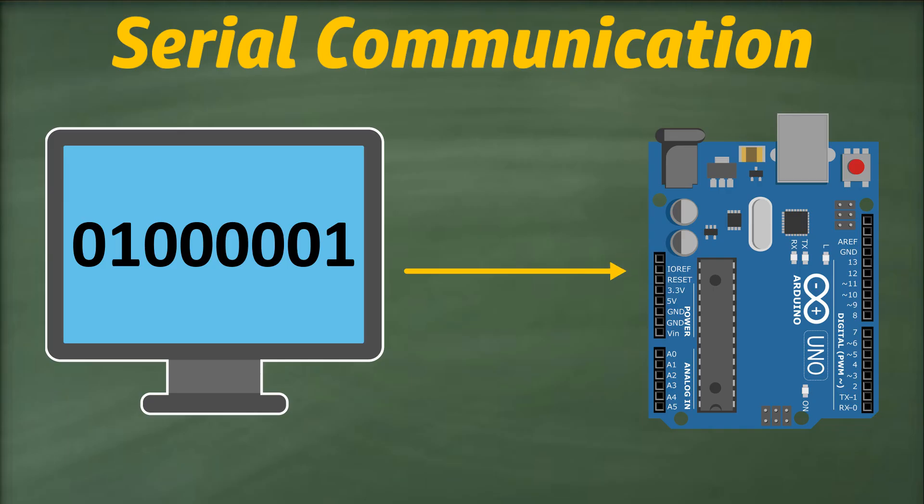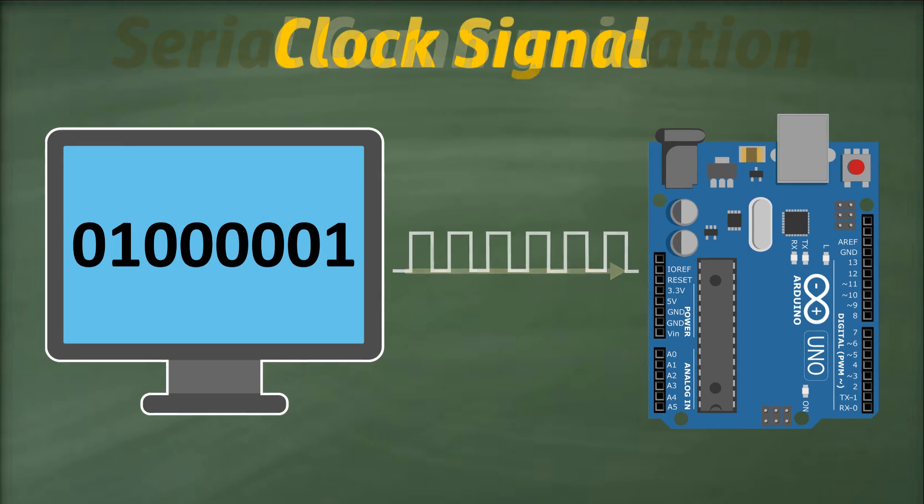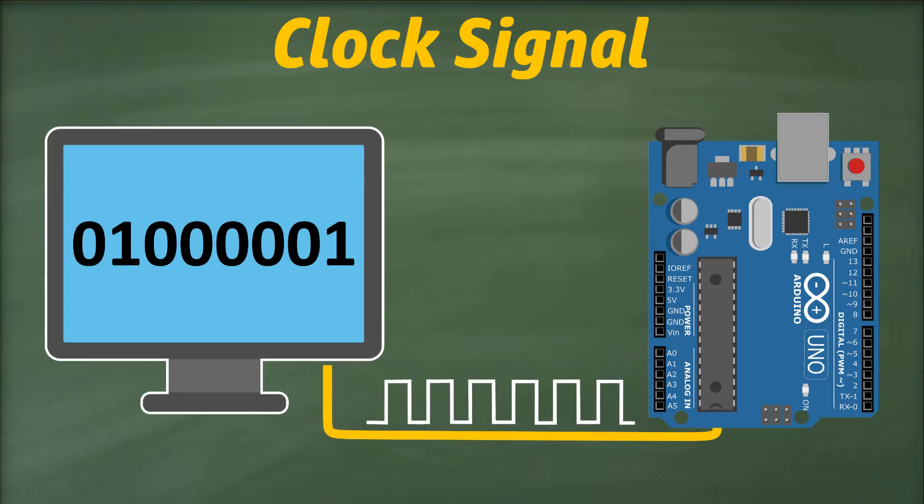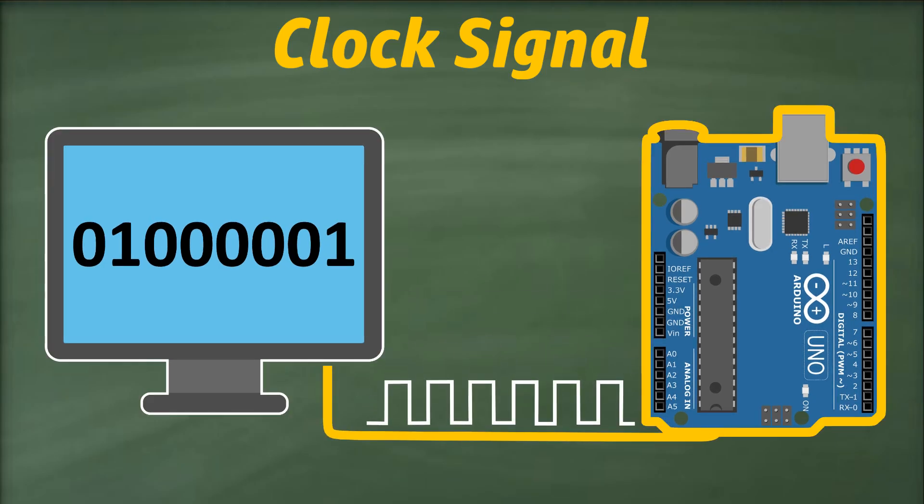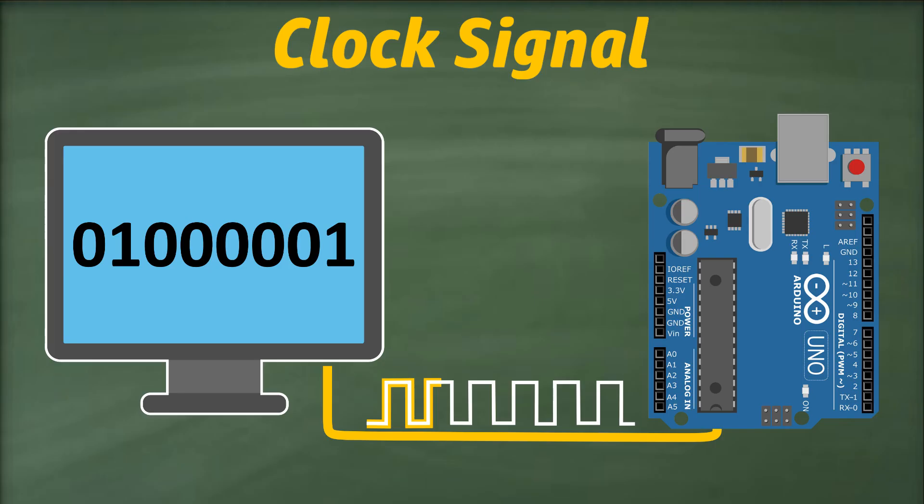To understand why serial communication is slower, we will have to introduce the concept of clock signal in digital electronics. A clock signal is basically a timing signal that is shared between both the sender and the receiver. This signal oscillates between high and low states at a consistent frequency. This signal maintains synchronization between the sender and the receiver.